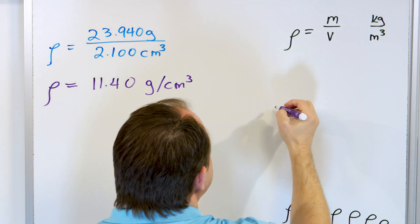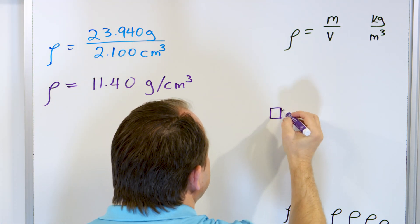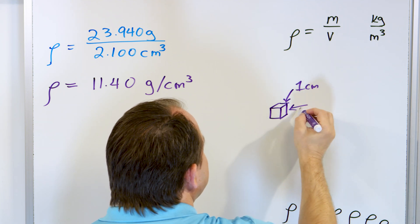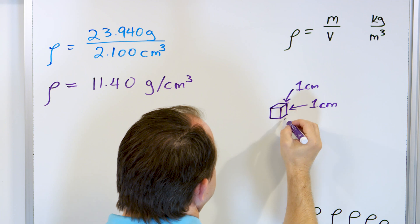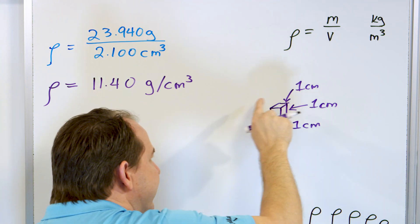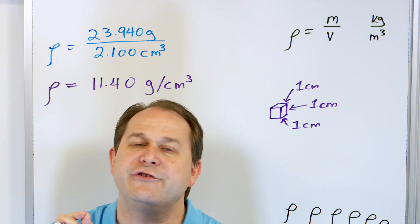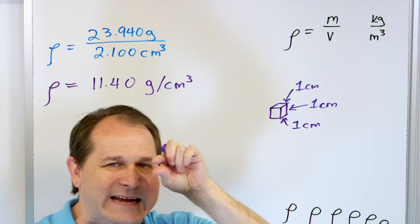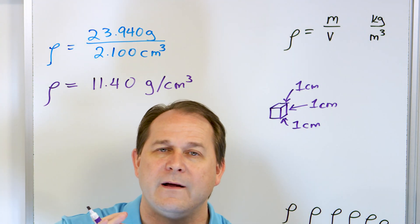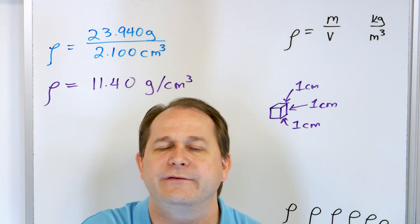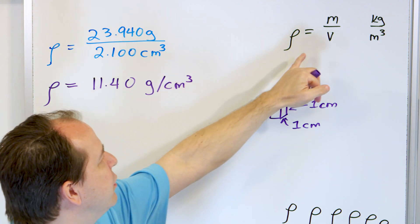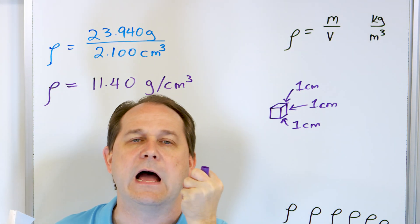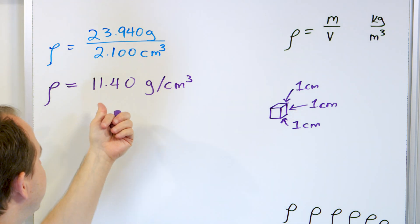This density means 11.4 grams exist inside every cubic centimeter — a cube in space with one centimeter on each side. If you compress the lead more, squeezing the atoms closer together, the same mass goes into a smaller volume and the density gets higher. As you compress things, density increases because you're squeezing the mass into a smaller and smaller volume.